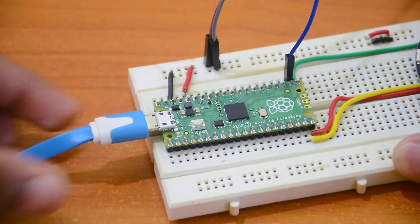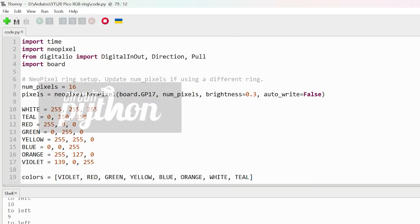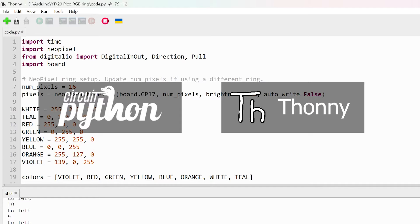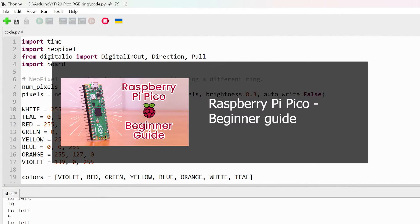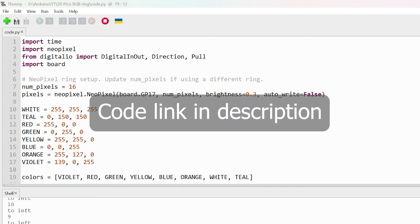Now connect the Pico to your computer. This project is done in CircuitPython, so your Pico should be running CircuitPython. You need to have Thonny installed and ready. If you need help with that, please watch my previous video. Now download the code from the description and extract it.